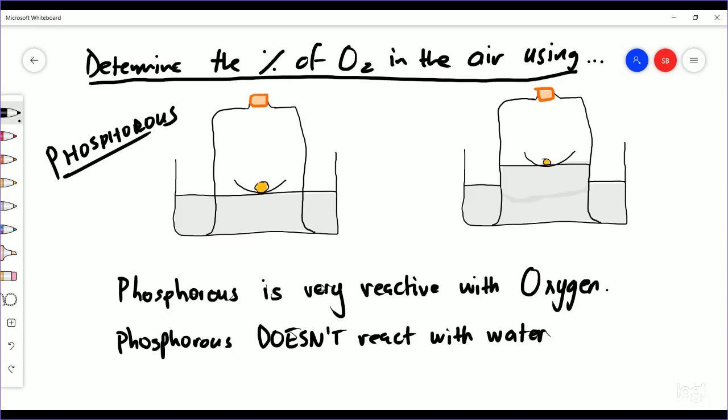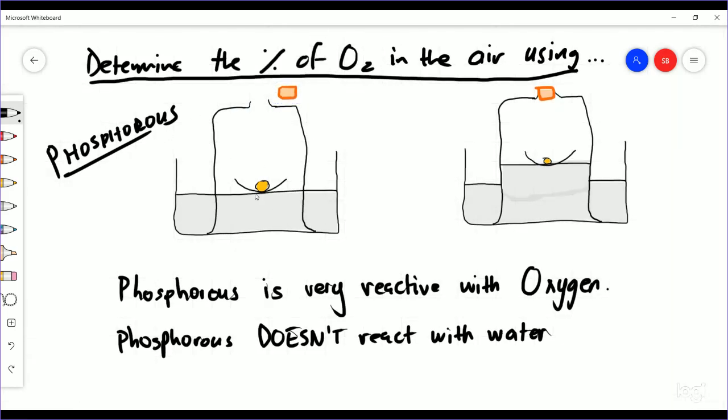But it doesn't react with water so you can store it in water. What you can do is have a bell jar here with a little rubber stopper. You can put your phosphorus quickly into an evaporating basin, let some air into this bell jar and record the level of the water over here.